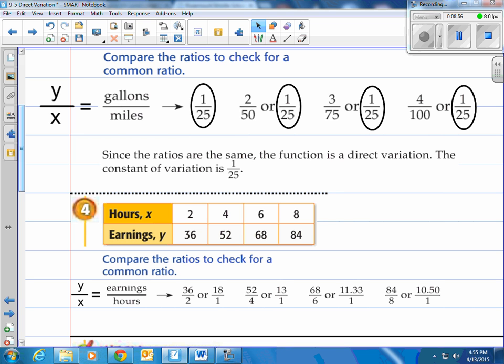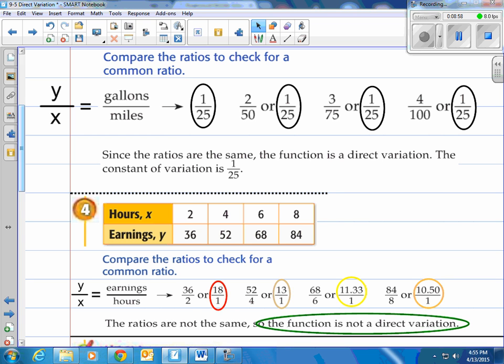Ah, I see something a little goofy there. The ratios are not the same. So the function is not a direct variation. Again the constant of variation has to be constant. Meaning it has to have the same value. Our first one in example 3 did. Our second one here did not. Again it's just y divided by x. Come up with that number.